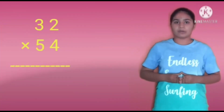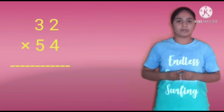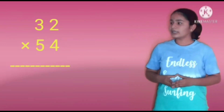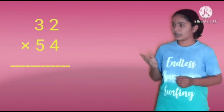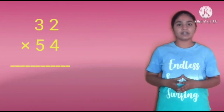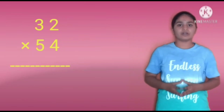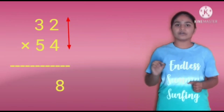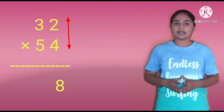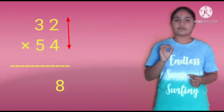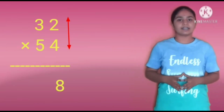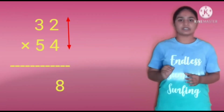Now let us do a problem to understand more clearly. Here, we are given that 32 is multiplied by 54. We have to do unit digit multiplication. That is 2 into 4 equals 8. So, write the 8 in the units place.